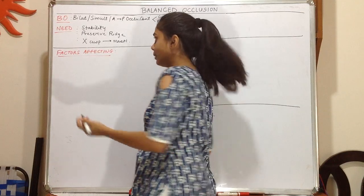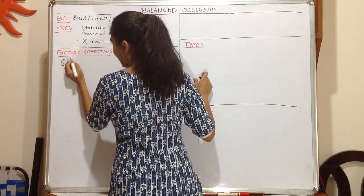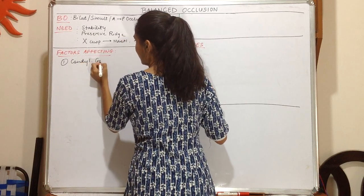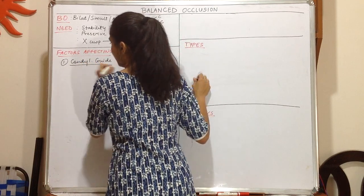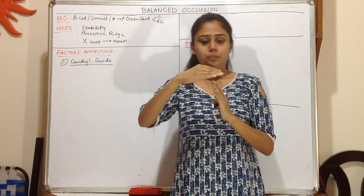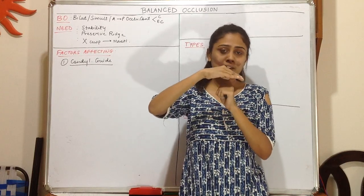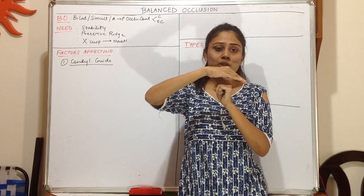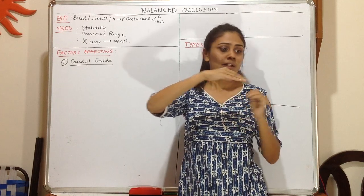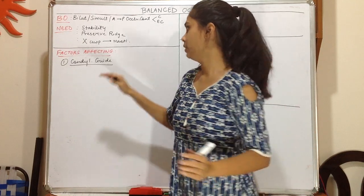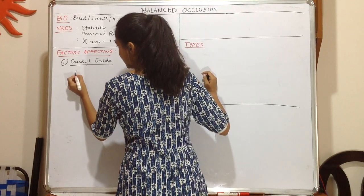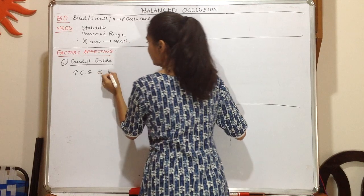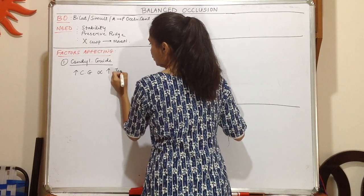So what are the factors which affect balanced occlusion? There are basically five factors. The first is condylar guidance. The path travelled by the condyle in the glenoid fossa is the condylar guidance. The more the path travelled by the condyle, the more the amount of jaw separation — so an increase in condylar guidance is directly proportional to an increase in jaw separation.